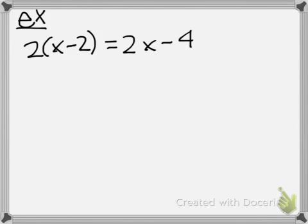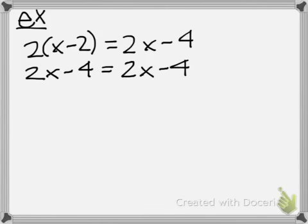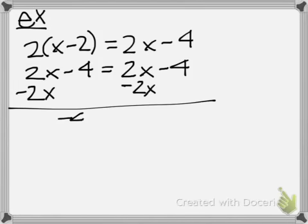So we have an example. This example is an equation that you would have. You solve it. Two times x is 2x. Two times negative two is negative four. Just bring down 2x minus four. You can see here that there's a problem. When we subtract 2x from both sides, we end up with negative four equals negative four.